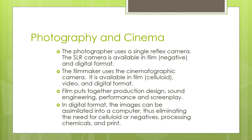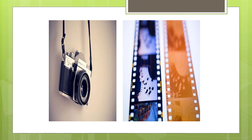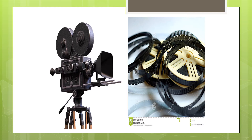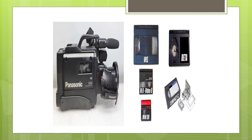Photography and cinema. The photographer uses a single reflex camera — the SLR camera — available in film (negative form) and digital format. The filmmaker uses the cinematographic camera, available in film through the celluloid medium and video and digital format. Film puts together production design, sound, engineering, performance, and screenplay. In digital format, images can be assimilated into a computer, eliminating the need for celluloid or negatives, processing chemicals, and print. The camera is the tool of the photographer and film is the medium of recording; the film camera is the tool of the director and the celluloid is the medium.